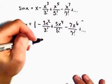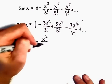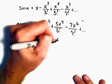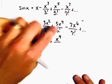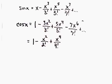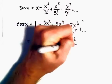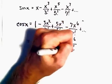The 3 over 3 factorial will just leave us with 2 factorial in the denominator. Then we'll have x to the fourth. 5 over 5 factorial will simplify to 4 factorial, and then x to the sixth over 6 factorial, etc.